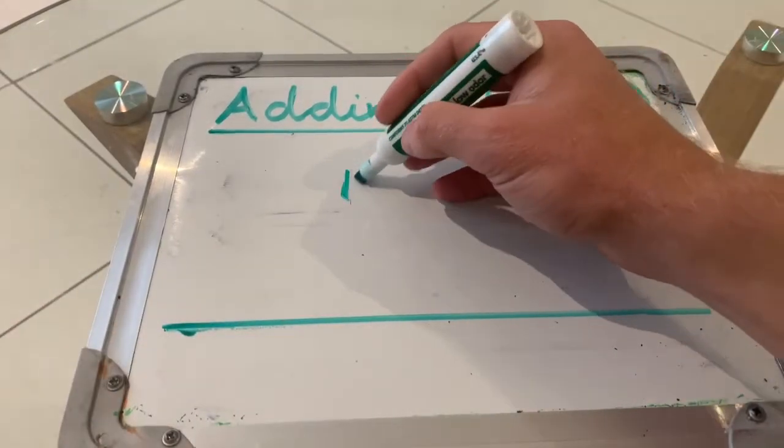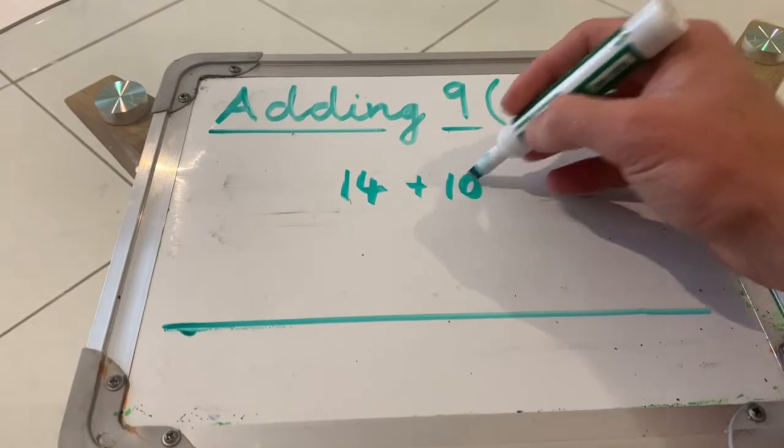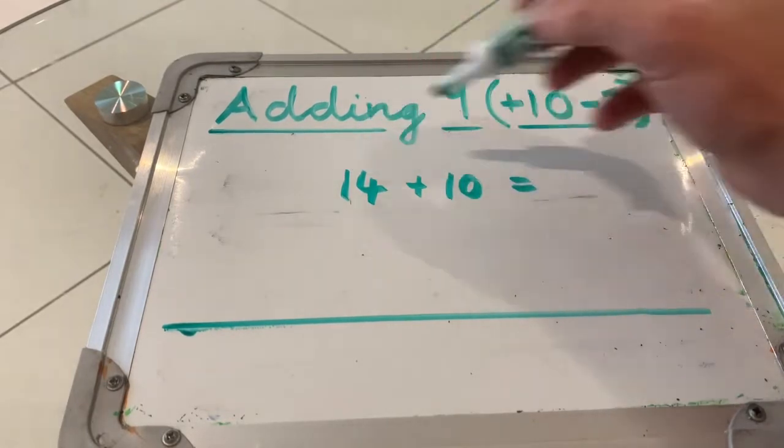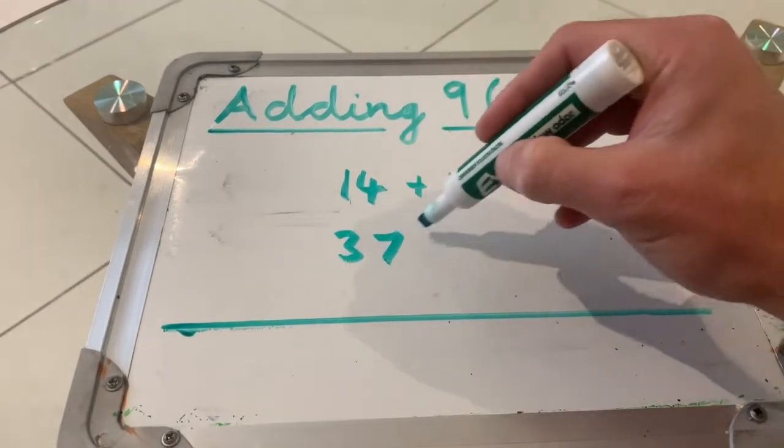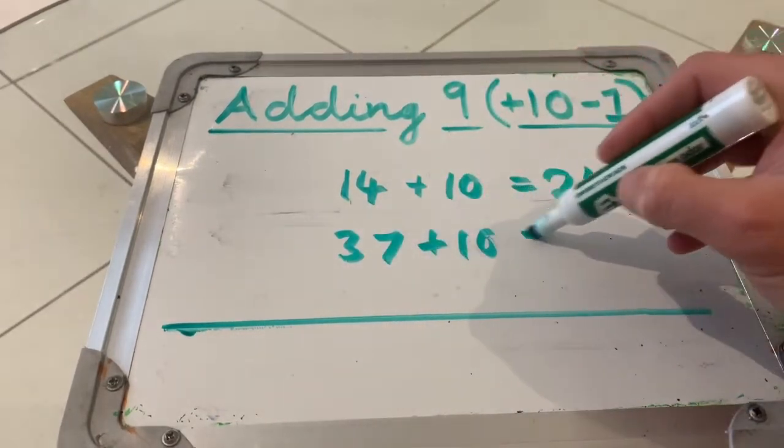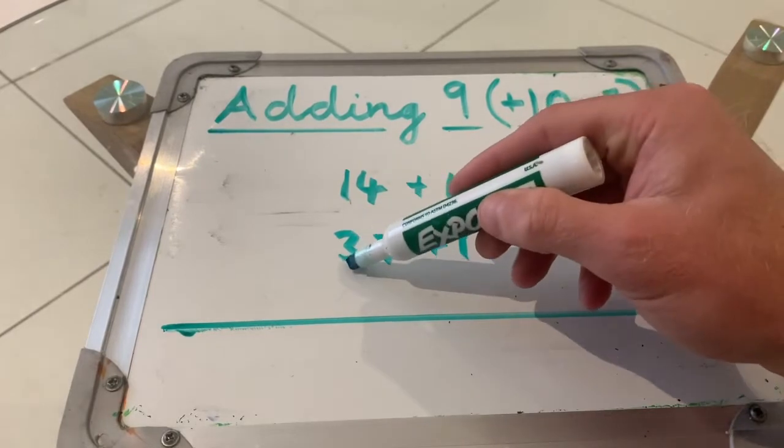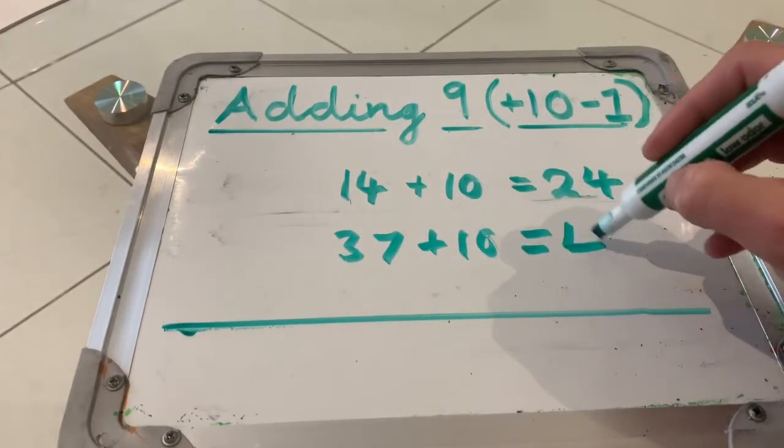If you've got 14 plus 10, you simply change the number in the 10s column to 2 tens to make 24. If you've got 37 plus 10, then we change, again, just the number in the 10s column to make 47.